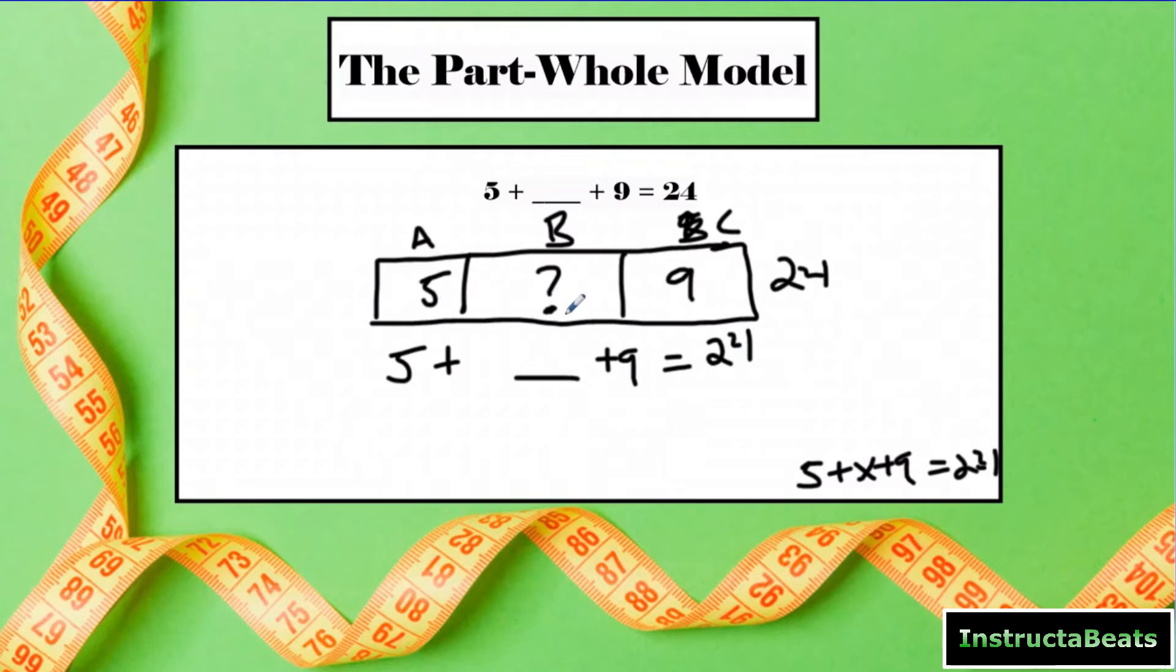And so the first thing you want to do is you want to combine the pieces that you know. You want to find out how much of my tape diagram do I already know? So you combine the five and nine and you're going to do 5 + 14 = 24.